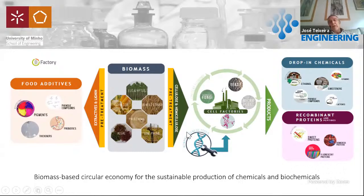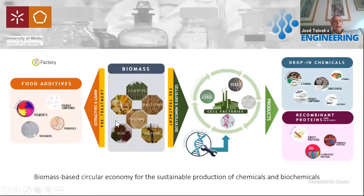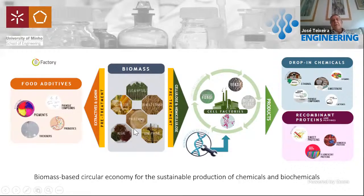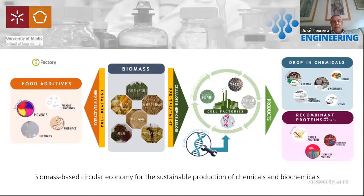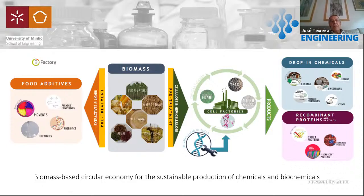We use cellulose and hemicellulose for the production of drop-in chemicals — we started with bioethanol but have been moving to other compounds — and also to produce recombinant proteins. On the other side, we look at extractives and lignin. In both cases, we need to develop pretreatment technologies. There are several pretreatment technologies available for fractionation of biomass, and ohmic heating is an added-value, greener technique to process biomass.